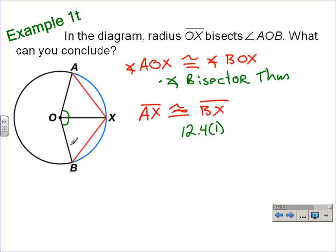Angle AOX and angle BOX are congruent central angles. Therefore, their chords are congruent. So we could mark segment AX congruent to segment BX, because they are corresponding chords to congruent central angles.